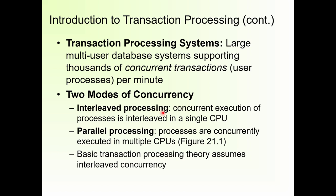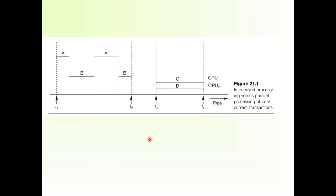In concurrent transactions, there are two modes of concurrency: interleaved processing and parallel processing. In interleaved processing, concurrent execution of processes is interleaved on a single CPU. In parallel processing, processes are concurrently executed on multiple CPUs. Here in single CPU mode, execution is interleaved.